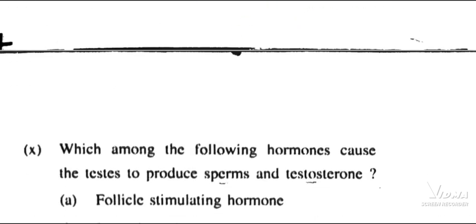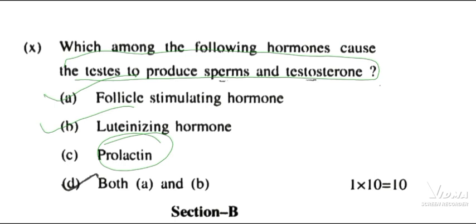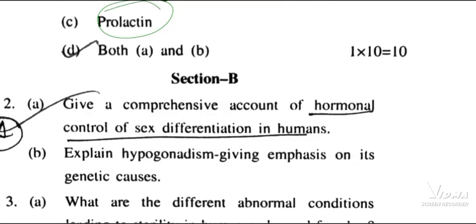Moving to the last question of Section A: which of the following hormones cause the testes to produce sperms and testosterone? Follicle Stimulating Hormone along with Luteinizing Hormone is basically responsible for producing sperms and testosterone. Prolactin is found in females for lactation or milk production.